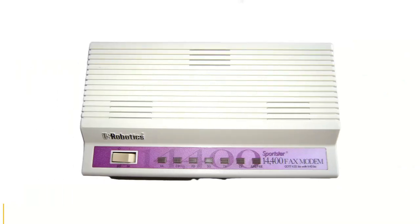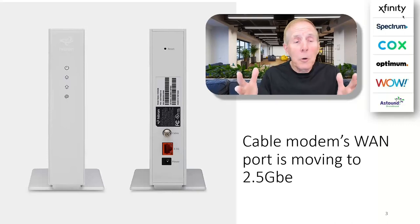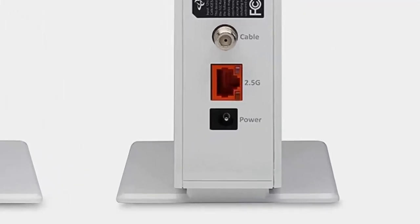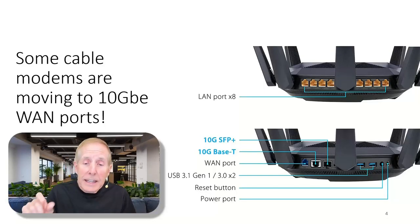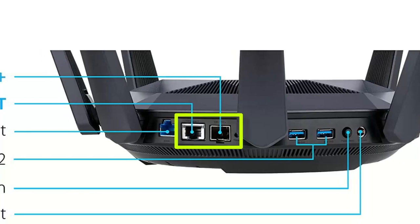We've come a long way from 28.8 modem speeds. Most of your new home routers now come with at least a 2.5 gigabit WAN port. Here's one of the latest home routers from Asus, and they even have an optical SFP plus connector so you can plug in a fiber optic transceiver and bring 10 gigs to this home router.